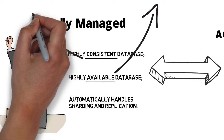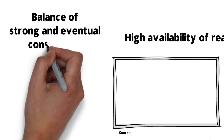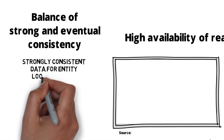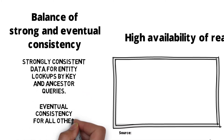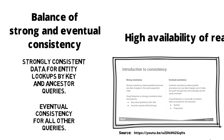Google Cloud Datastore provides high consistency through a balance of strong and eventual consistency. Entity lookups by key and ancestor queries are strongly consistent, while all other queries use eventual consistency. If you're using Datastore like a key-value store — just doing gets, lookups, and writes — it's strongly consistent because data is synchronously replicated across the network. You get eventual consistency when using indexes, since indexes themselves are eventually consistent. Ancestor queries, where you query within a single entity group hierarchy, are also strongly consistent, so co-locating your data allows for guaranteed strongly consistent queries.